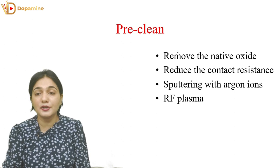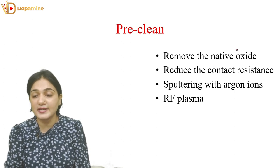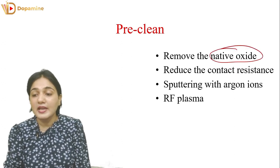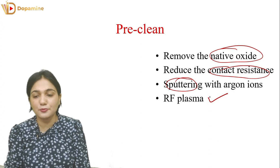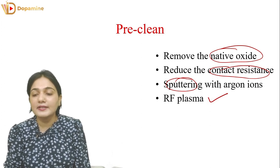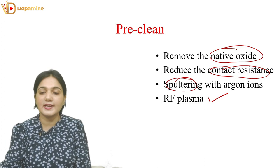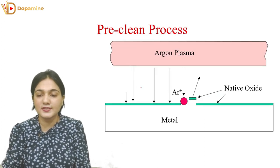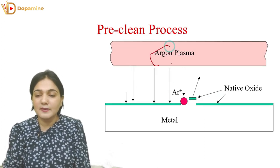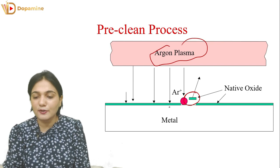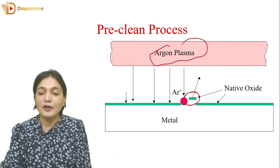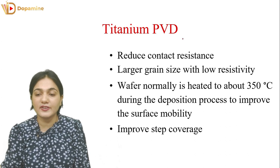Coming to the pre-clean step: we remove native oxide from the surface, which reduces contact resistance. We use argon ions — specifically argon plasma — and we hit the native oxide to remove that layer. The oxide layer is thus removed from the metal surface.